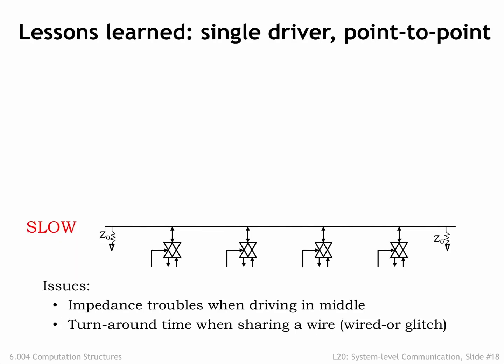As we saw in the previous section, there are a lot of electrical issues when trying to communicate over a shared wire with multiple drivers and receivers. Slowing down the rate of communication helps to solve the problem, but slow isn't in the cards for today's high-performance systems.